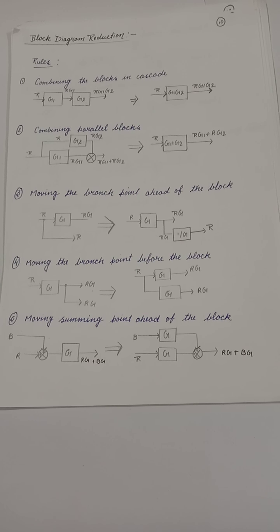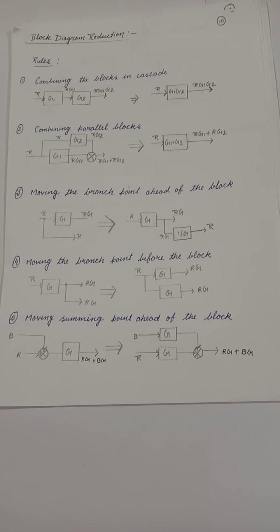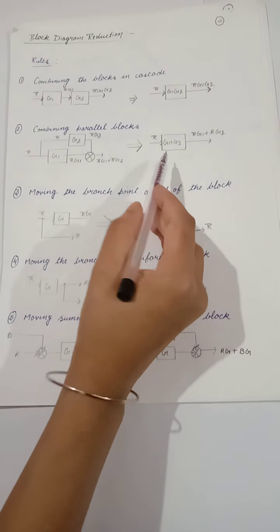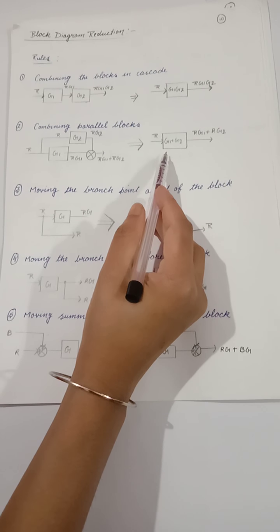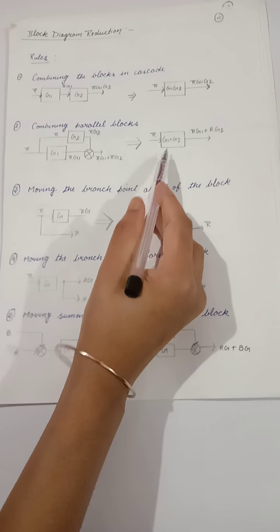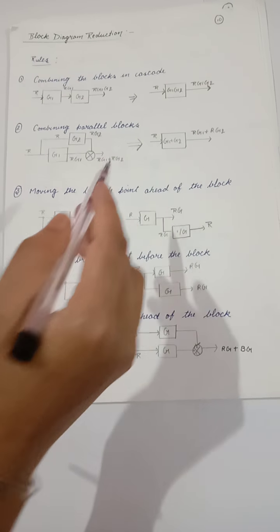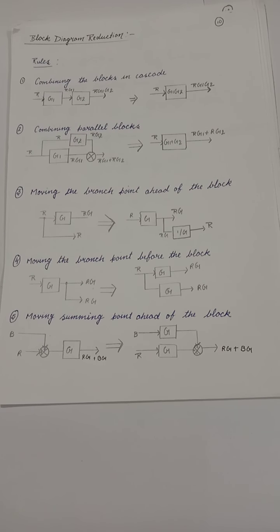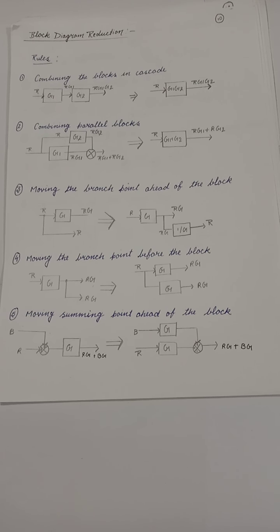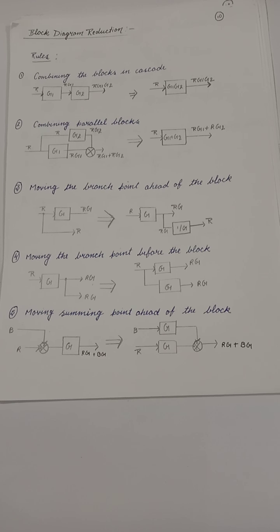For the second rule, for parallel blocks we can combine them using addition — just by adding the gains G1 and G2 — getting the same output. Coming to the third rule: moving the branch point ahead of the block.